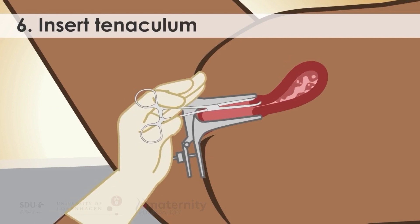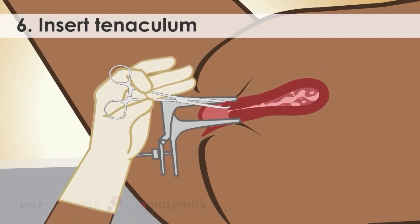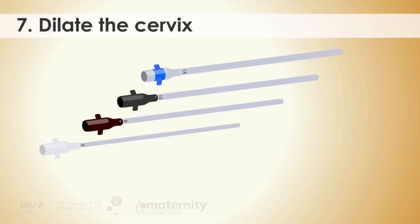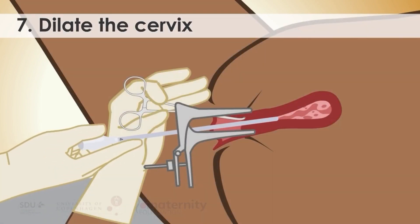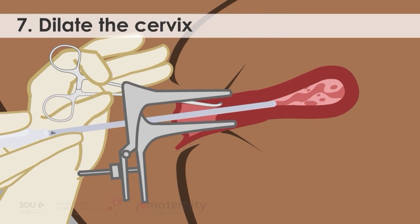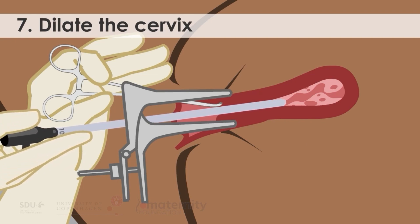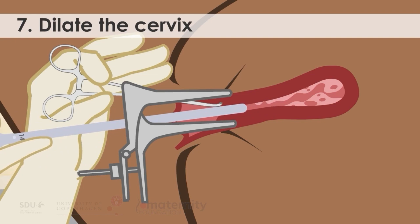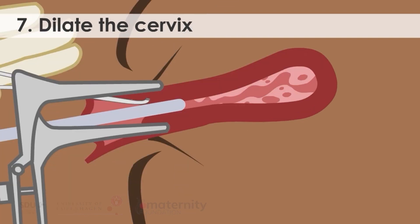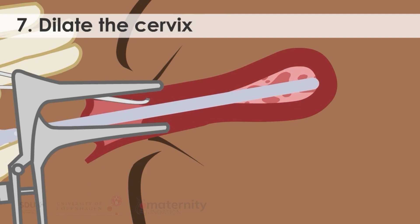6. Insert tenaculum in anterior lip of cervix. 7. Usually the cervix is open. If closed, you dilate the cervix with cannulas starting with the lowest numbers. The tips of the cannulas are sterile and must touch nothing other than the cervix — the so-called no-touch technique. Proceed dilating the cervix with cannulas up to the number corresponding to the gestational week. The cannula is inserted gently until it reaches the fundus of the uterus where a resistance is felt. Don't use force to avoid penetrating the fundus.